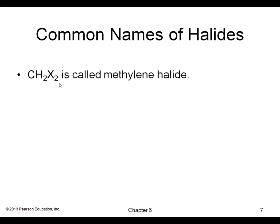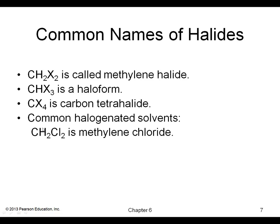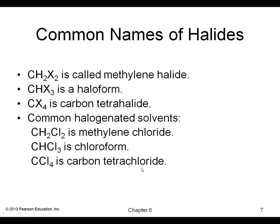Some other common names of halides: the methylene group is CH2, and when we have two halogens on it we get a methylene halide — for example, methylene chloride. If you have three halogens on the same carbon, you get a haloform; if that was chlorine, you'd get chloroform. And if you have four halogens on the same carbon, it's a carbon tetrahalide — for example, carbon tetrachloride. These turn out to be nice solvents: methylene chloride, chloroform, and carbon tetrachloride.